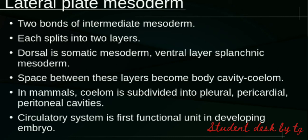Between these two layers there is a space called the coelom, which forms the body cavity. In mammals, the coelom is subdivided into the pleural, pericardial, and peritoneal cavities. In mammals, the circulatory system was the first functional unit to develop in the embryo, and this was associated with the formation of the coelom.